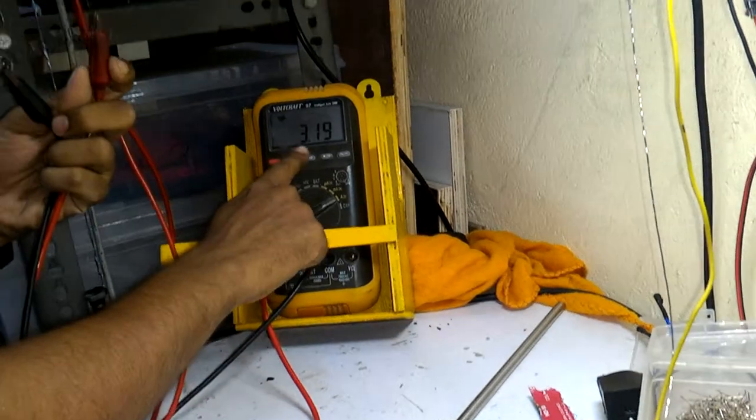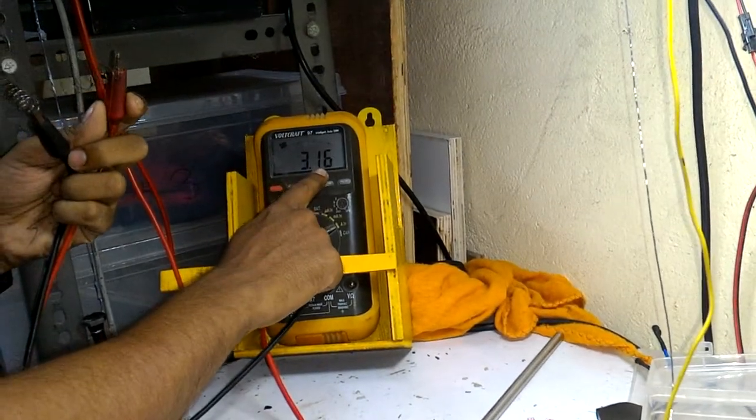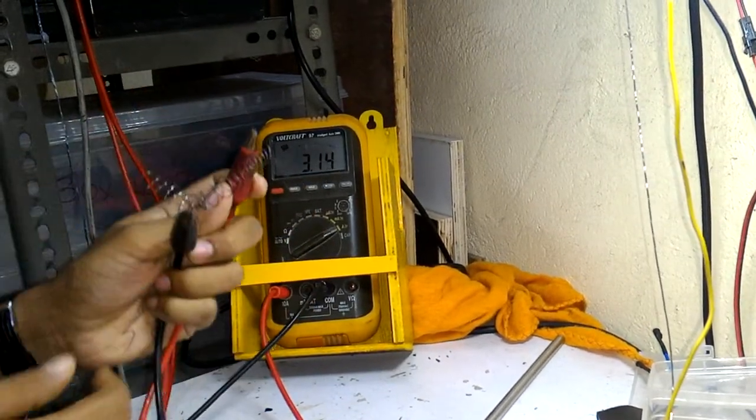Now you see the ammeter is showing me 3.19 amperes at 12 volts.